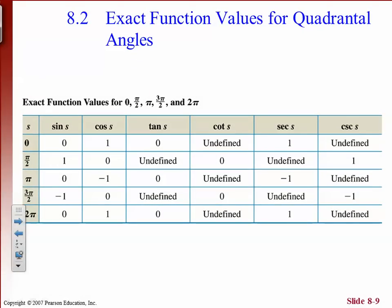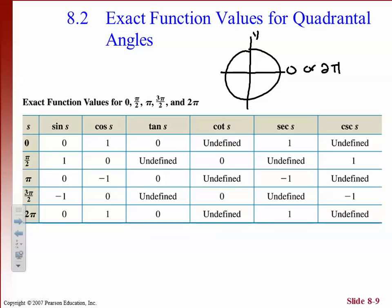These are all the values at the 90-degree points: 0 or 2 pi, pi over 2, pi, and 3 pi over 2 — the quarters of the circle — showing the six different trig function values at each position. This is in your book if you want to look at it or use it for reference.